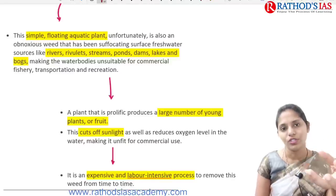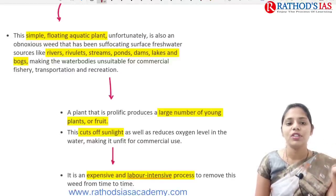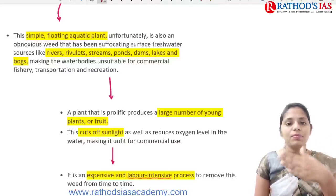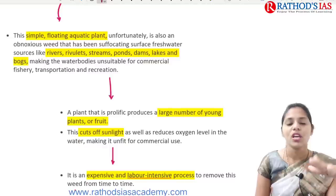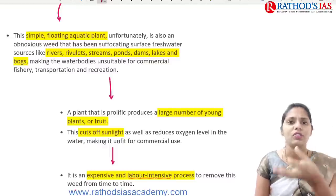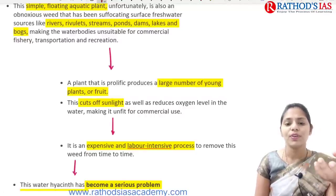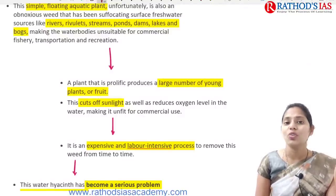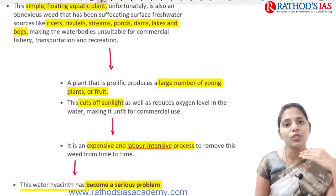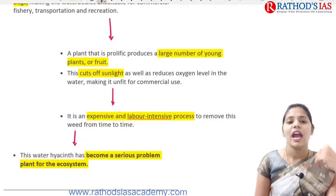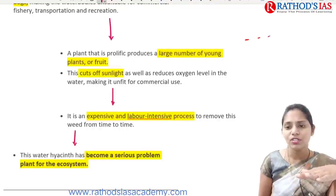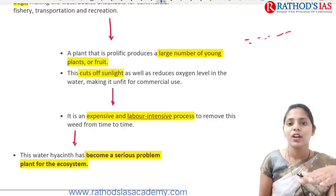Water hyacinth is mainly seen on surface water in rivers, river beds, streams, ponds, dams, lakes, and reservoirs. It produces a very large number of young plants, so its reproduction rate is very fast, making it very difficult to control its growth.